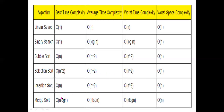Next, merge sort: best time complexity, average time complexity, and worst time complexity are all the same — that is O(n log n).